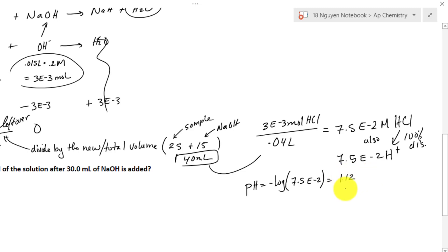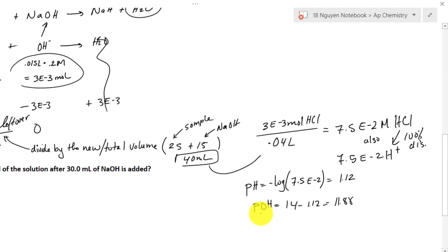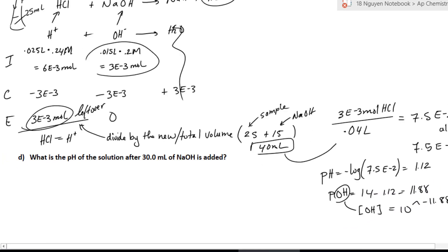This makes sense — it is very acidic. If we want the pOH, it equals 14 minus 1.12, which gives us 11.88. And if we have our pOH, we can find the concentration of OH⁻: it's 10 to the negative 11.88. Now let's prove that 30 milliliters really is the equivalence point.